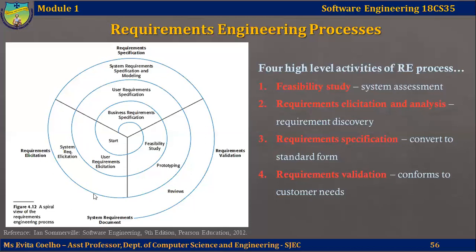After user requirements are elicited, you prepare the user requirement specification document. Once you have the requirement specification of the user, you build prototypes or models to understand these requirements in detail, so that based on the user requirements you can develop or find out system requirements. System requirements are more detailed, developer-oriented requirements. Once you have this in detail, you develop another document called the SRS or System Requirement Specification.